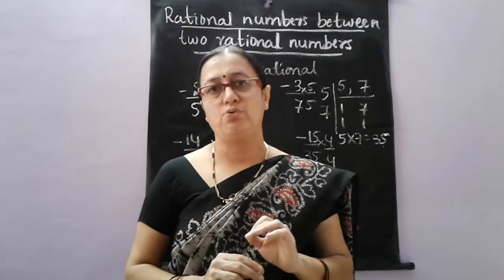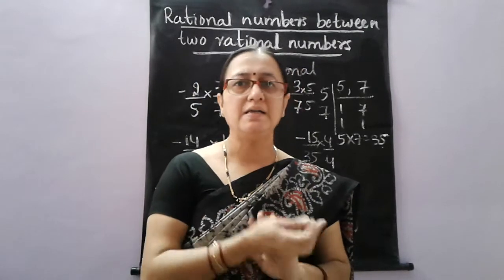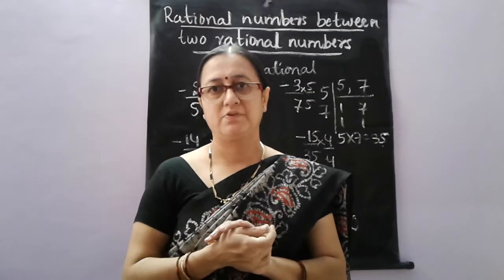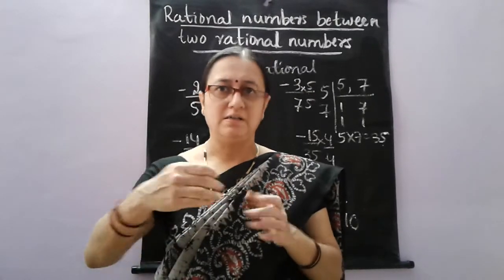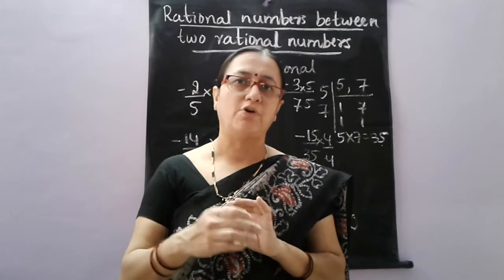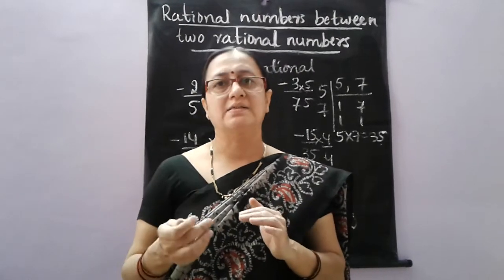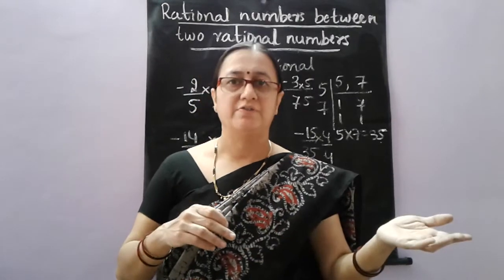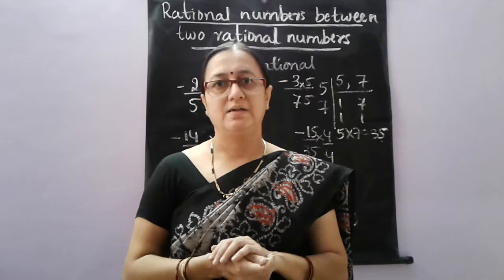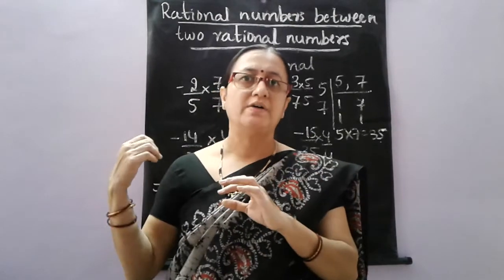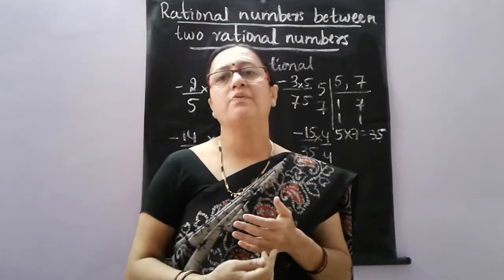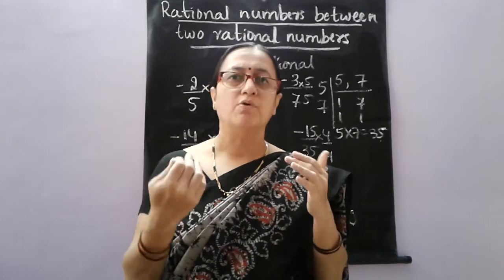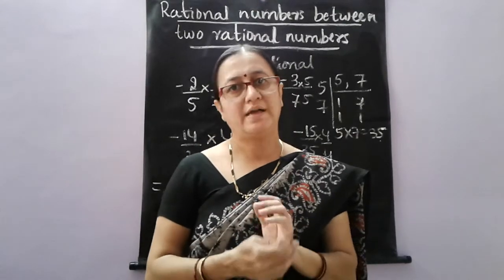Exercise 1.2 consists of representing rational numbers on the number line and finding rational numbers between rational numbers. A PDF with notes has been sent. All of you have to follow the PDF and find the answers for exercise 1.2. First solve on your own, then check the PDF. If you do not understand in the first attempt, listen to the video again — the concept will become clearer. Thank you everybody.